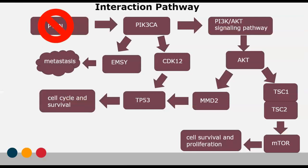Based on analysis of all this data, an interaction pathway for how these genes contribute to breast cancer liver metastasis was constructed. The deletion of P10 led to the activation of PIK3CA, signaling the PI3K pathway, which activated AKT. AKT can then activate MDM2 or TSC1 and 2. Activation of TSC1 and 2 activates MTOR, leading to cell survival and proliferation. Activation of MDM2 inactivates TP53, leading to continued cell cycle and proliferation. PIK3CA is believed to activate MZ and CDK12. CDK12 activation leads to further signaling for TP53, while MZ activation leads to down-regulation of microRNA-31 and increased metastasis.